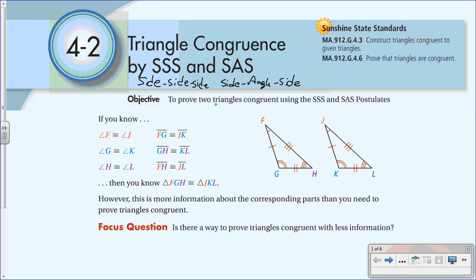Our objective here is to prove two triangles congruent using the side-side-side and side-angle-side postulates. We learned last video that if all three angles and all three sides are congruent between two triangles, they are congruent. However, this is more information than you need. Our focus question for today is: is there a way to prove triangles congruent with less information?